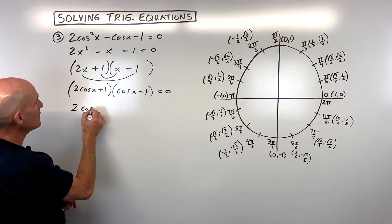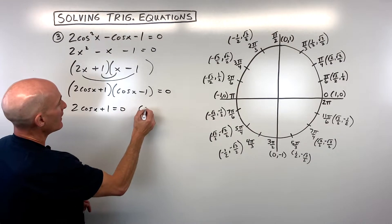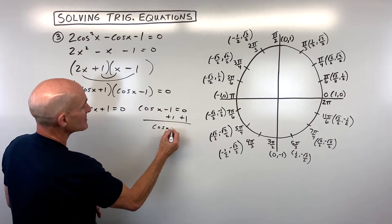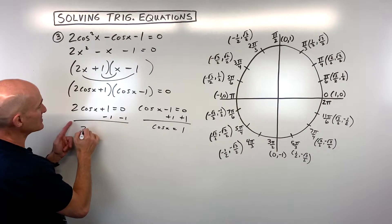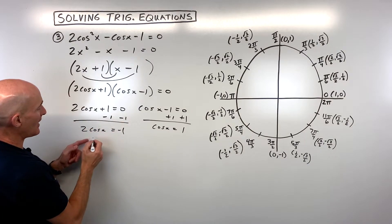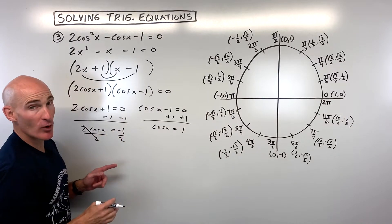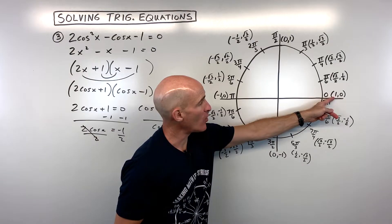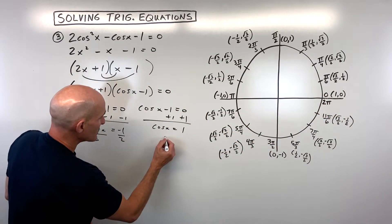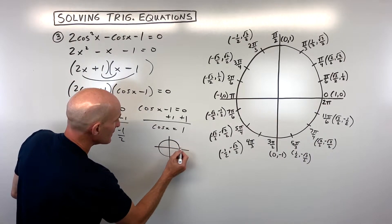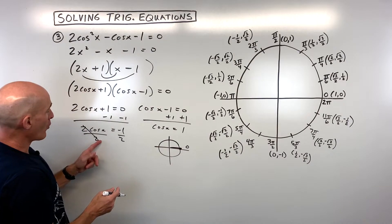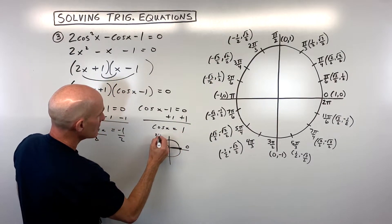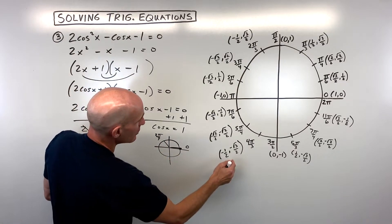Setting each factor equal to zero: two cosine x plus one equals zero gives cosine x equals negative one half, and cosine x minus one equals zero gives cosine x equals one. From the unit circle, cosine equals one at x equals zero. Cosine equals negative one half — where the x-coordinate is negative one half — at two pi over three and four pi over three.